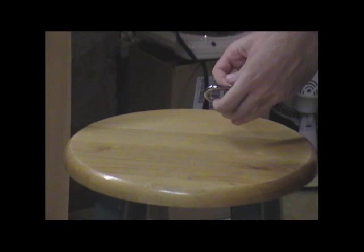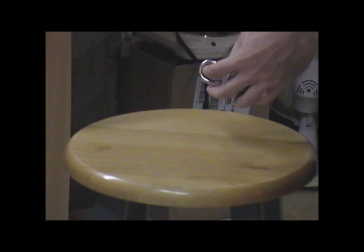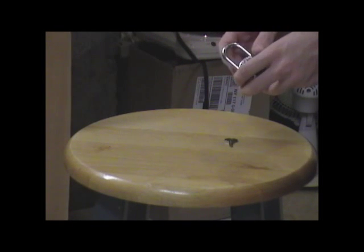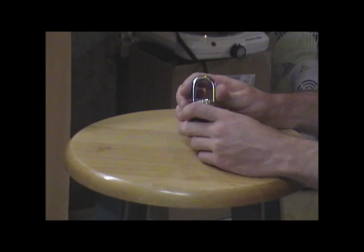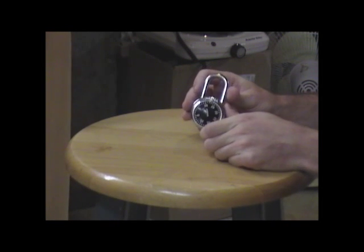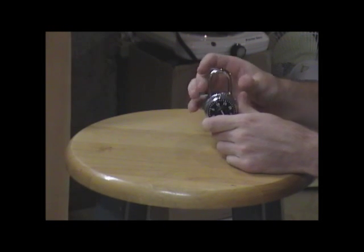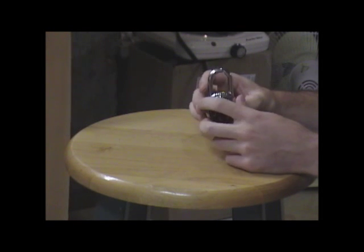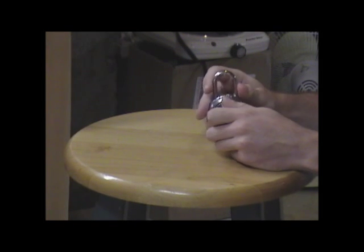So what you're going to do is open up the lock. Now to find the first number in the combination, rest the shackle on top of the hole and slowly spin the dial to the right.